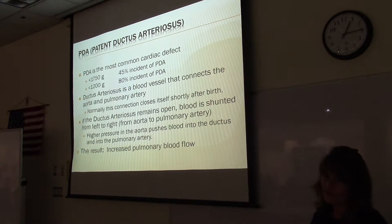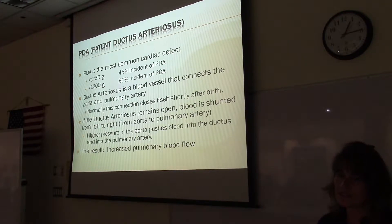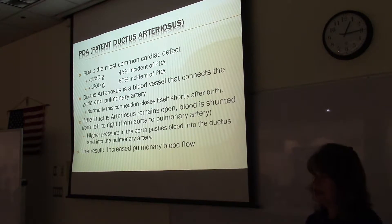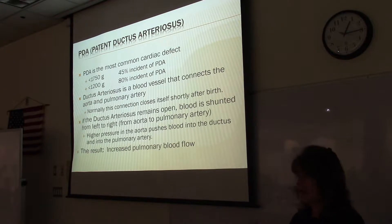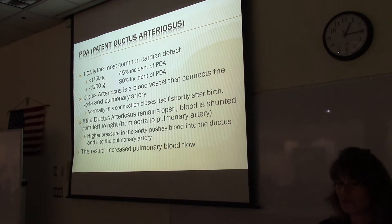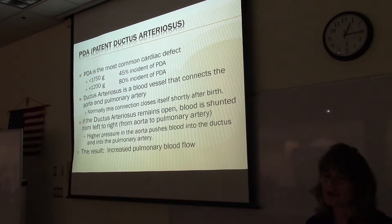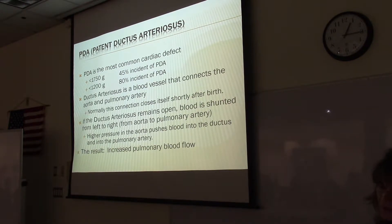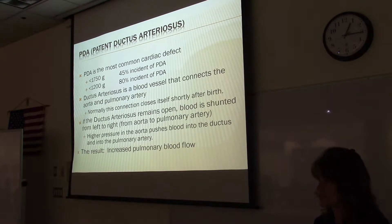The first defect on the list is PDA, or patent ductus arteriosus. This is the most common cardiac defect, and the more premature the infant, the higher the percentage. For infants less than 1,750 grams, there's a 45% incidence of the ductus arteriosus staying open. And for infants around 1,200 grams, 80% of the time the ductus arteriosus doesn't close.